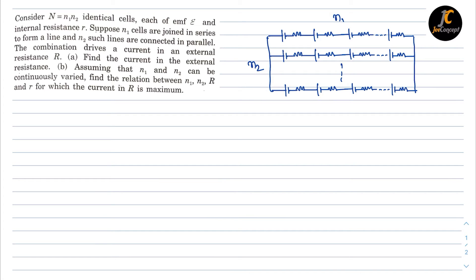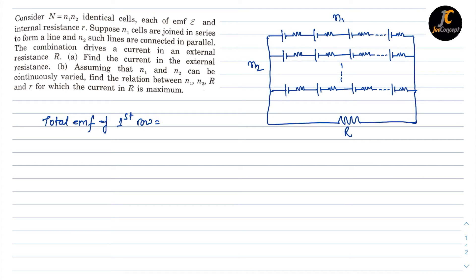For the first part, we have to find the current in the external resistance. The total EMF of the first row: since there are n1 cells connected in series, the total EMF will be n1 times e. Now all these rows are connected in parallel up to n2 rows, so the total EMF remains the same, equal to n1 times e.